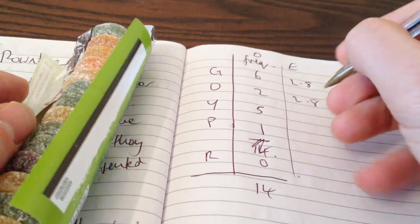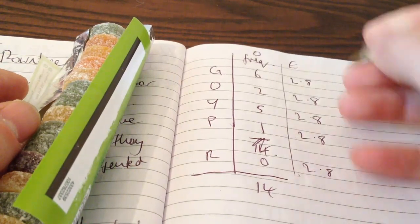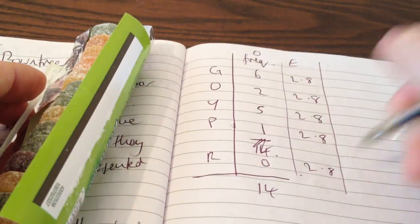Fourteen divided by five is going to be two point eight. I would expect, in a slightly bizarre, mathematically perfect pack of sweets, to get two point eight of each colour.